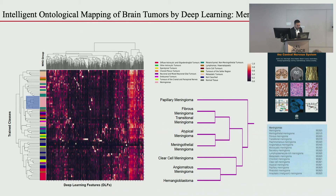Interestingly, the eighth class in that cluster is hemangioblastoma — nothing to do with meningiomas — but it grouped with angiomatous meningiomas. 'Angio' means vessels in Greek, same as 'hemangio.' You can hypothesize that these were clustered together because of real shared vascular features. This makes it hard to know what constitutes an error in unsupervised approaches.